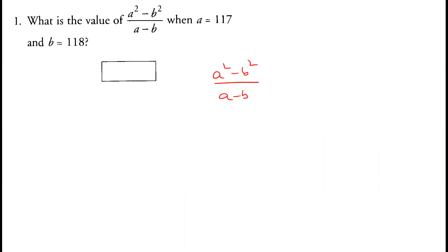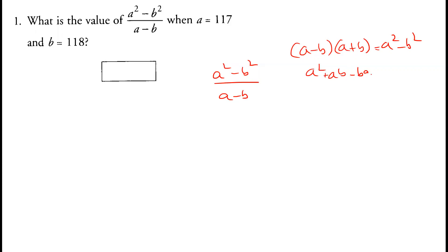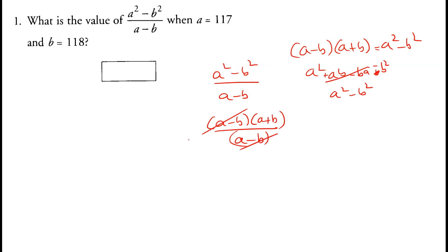Recall that (a minus b)(a plus b) equals a squared minus b squared. If you open this up: a times a is a squared, a times b is ab, minus b times a is minus ab, and minus b times b is minus b squared. These two middle terms cancel out, leaving a squared minus b squared. So we can write the numerator as (a minus b)(a plus b) over (a minus b). The (a minus b) cancels, leaving a plus b, that is 117 plus 118, which equals 235.